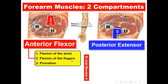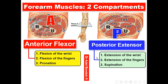The anterior compartment is responsible for flexion of the wrist, flexion of the fingers, and pronation. The posterior compartment is responsible for extension of the wrist, extension of the fingers, and supination. Regarding the nerve supply: